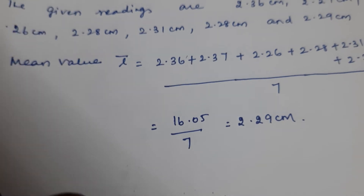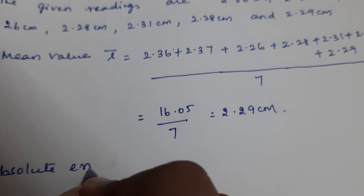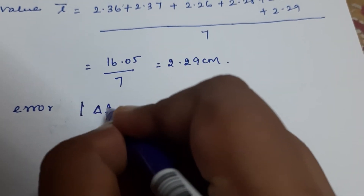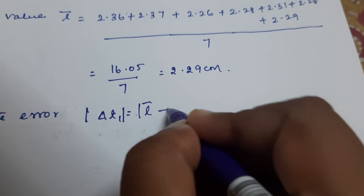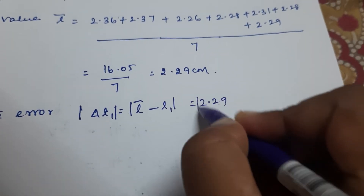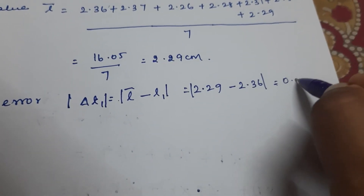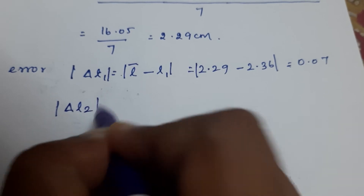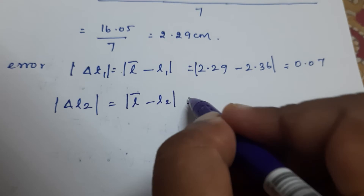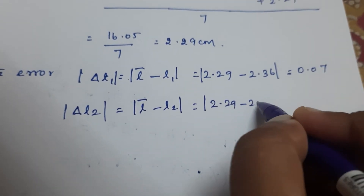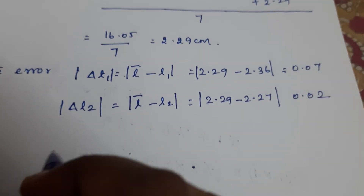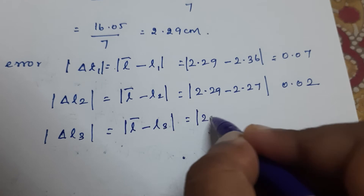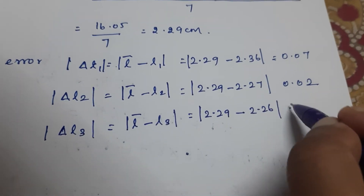We have found the mean value. Now we go for the absolute error. The formula is: modulus of ΔL₁ = |L̄ − L₁| = |2.29 − 2.36| = 0.07. Similarly, |ΔL₂| = |2.29 − 2.27| = 0.02. And |ΔL₃| = |2.29 − 2.26| = 0.03.